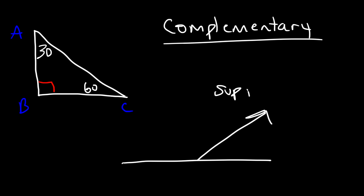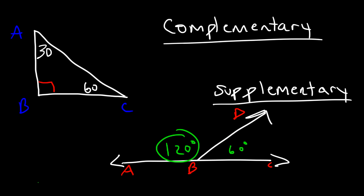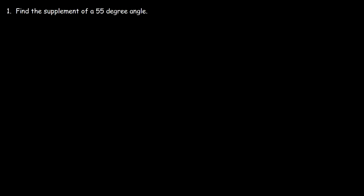Supplementary angles add up to 180 as opposed to 90. Let's call this A, B, C, and D. If angle ABD is 120, then angle CBD must be 60 because these two angles have to add up to 180. It turns out they also form a linear pair — a straight line with two angles — which also adds up to 180.